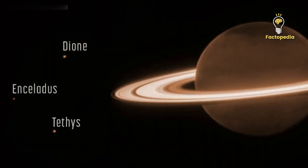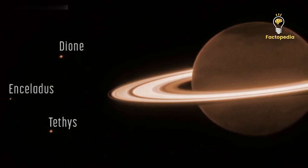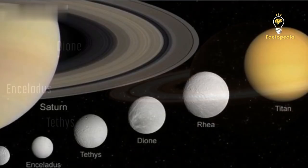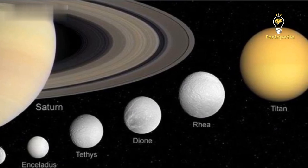While Saturn's rings undeniably captivate our attention, three of its 145 moons make a cameo appearance in this celestial snapshot. Dione, Enceladus, and Tethys appear as luminous specks, neatly aligned in ascending order.